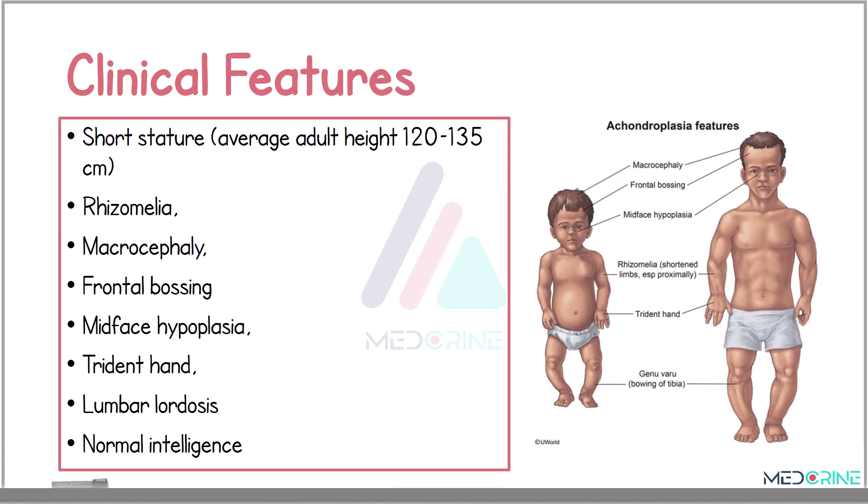Patients with achondroplasia present with short stature due to rhizomelia, or shortening of the proximal limbs, along with other features including macrocephaly with frontal bossing, midface hypoplasia, trident hand configuration, lumbar lordosis, and normal intelligence.